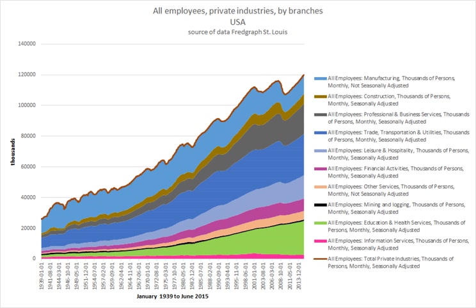Employees in some fields or sectors may receive gratuities, bonus payment, or stock options. In some types of employment, employees may receive benefits in addition to payment. Benefits can include health insurance, housing, disability insurance, or use of a gym.